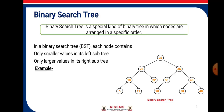Binary search tree is a special kind of binary tree in which nodes are arranged in a specific order. In a binary search tree, each node contains only smaller values in its left subtree and only larger values in its right subtree.